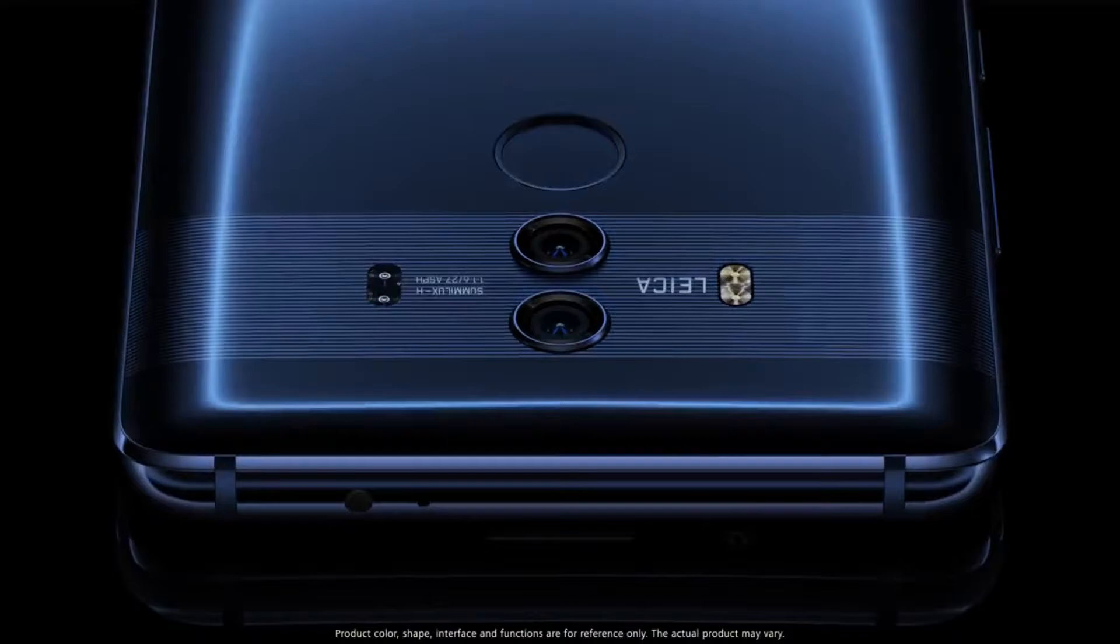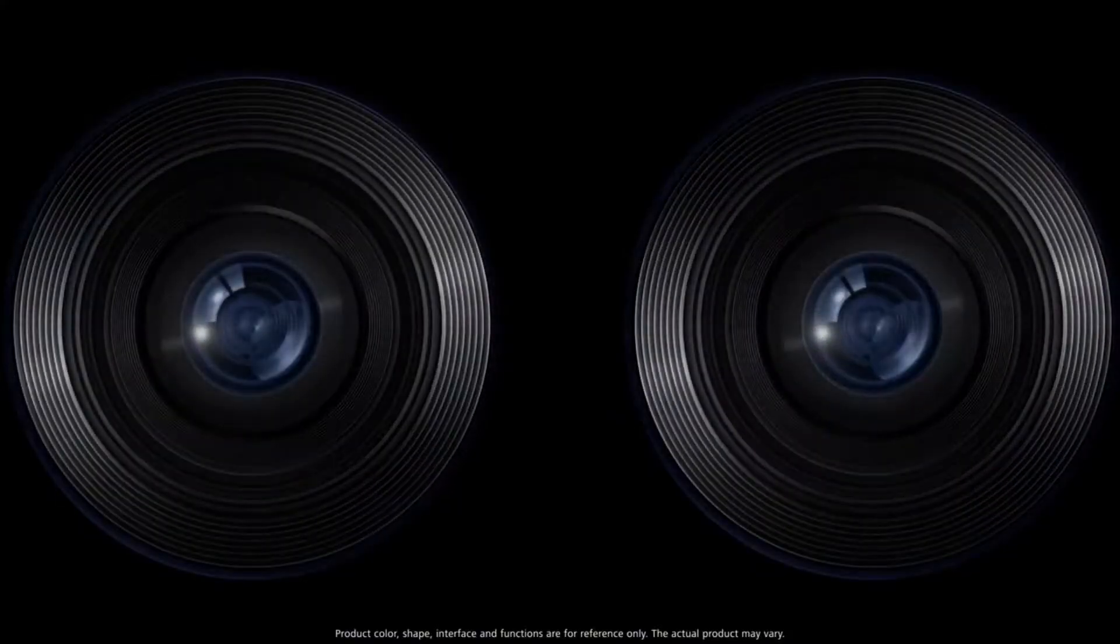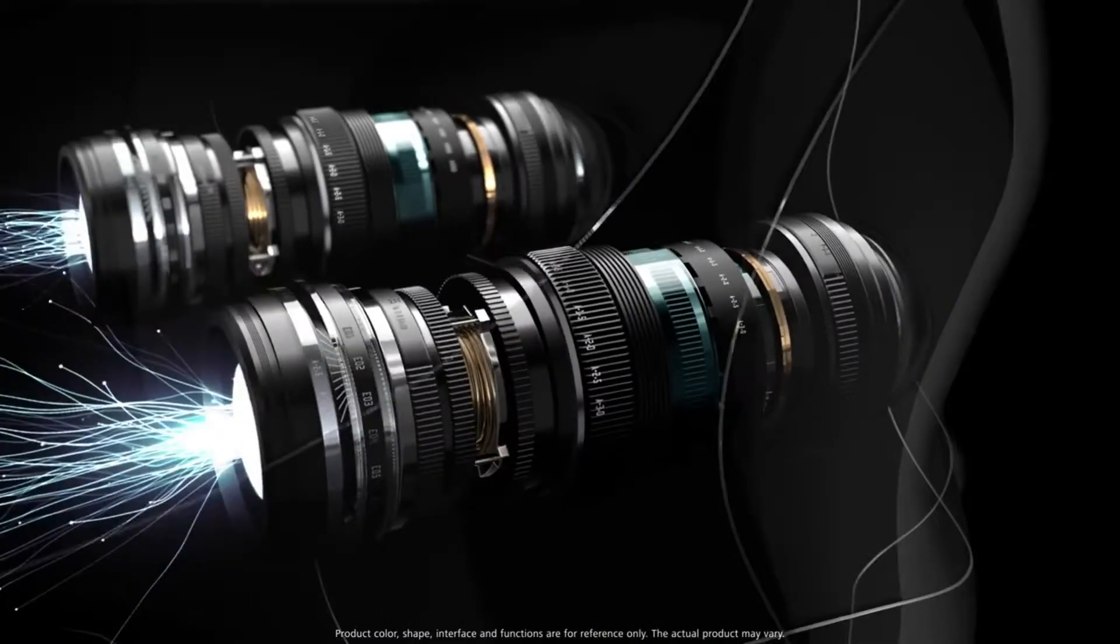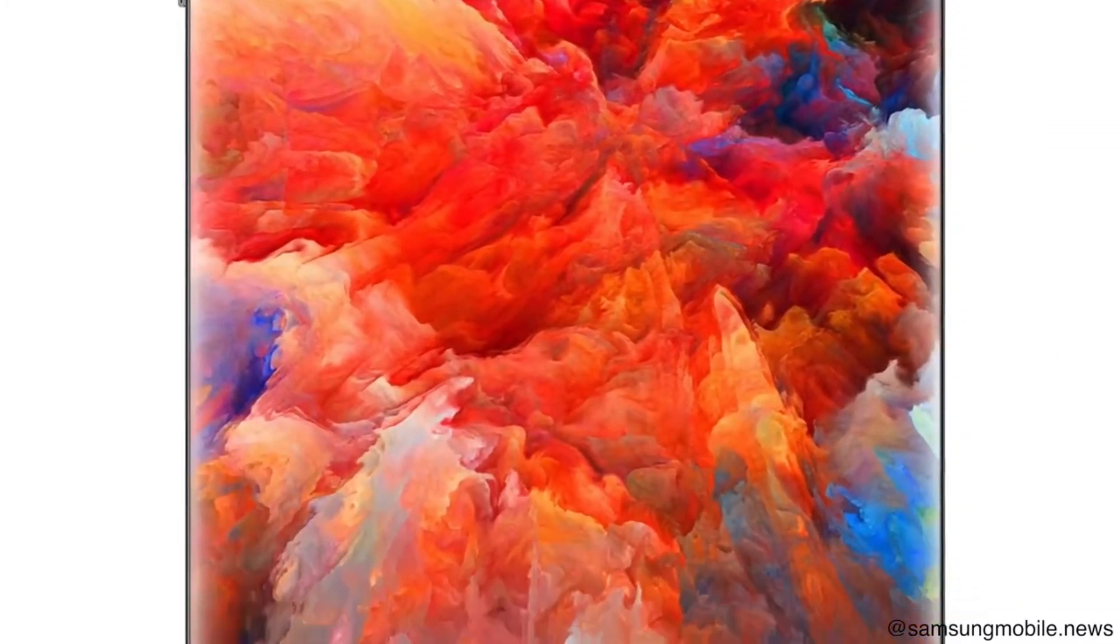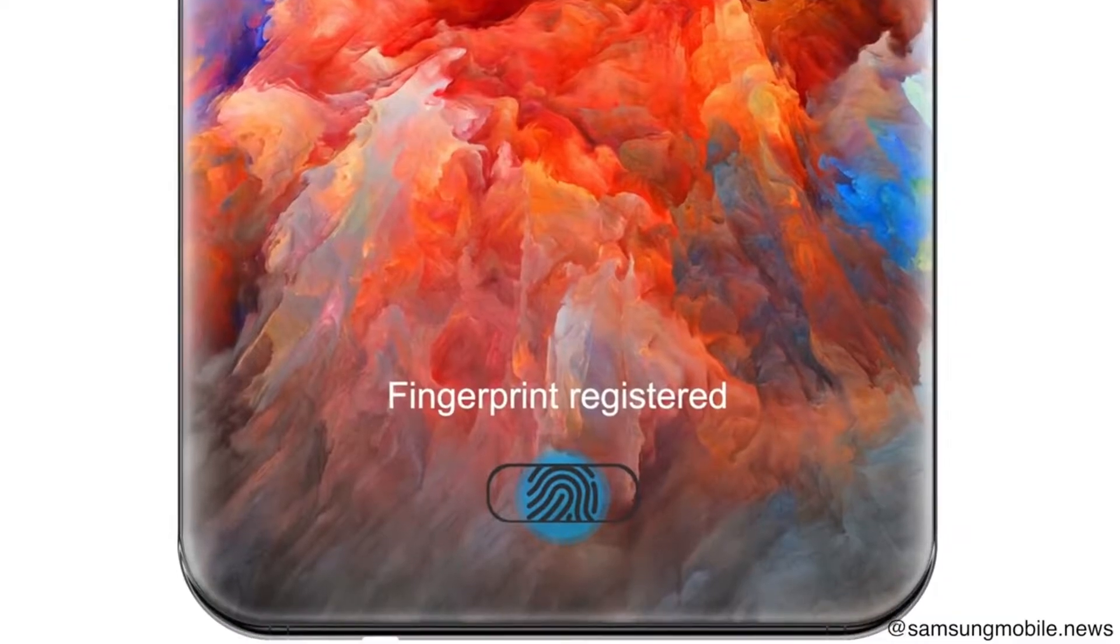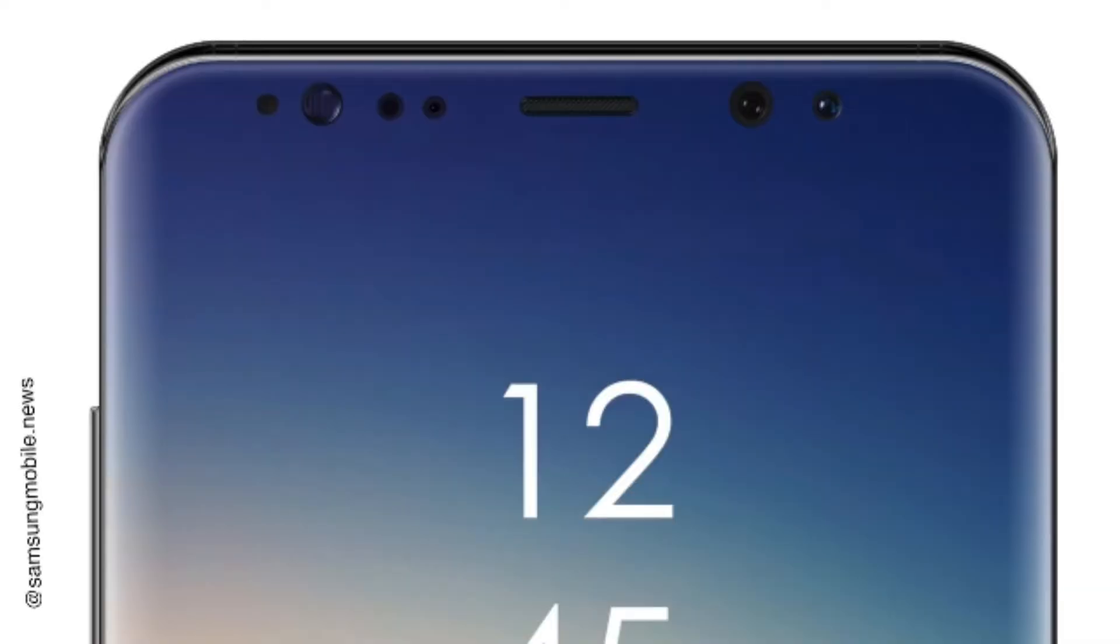According to the leaks, the first phones to arrive with the Kirin 980 might be Huawei Mate 20 and Mate 20 Pro. The biggest planning of Huawei behind the camera, which I will discuss in my upcoming video.